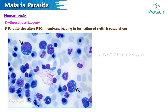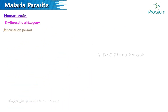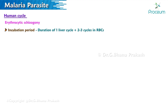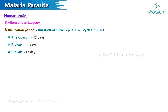Malarial pigment becomes visible inside red blood cells in the late trophozoite and schizont stage. The parasite also alters the red blood cell membrane, leading to formation of clefts and vacuolations. Incubation period is defined as one liver cycle plus 2–3 cycles in red blood cells: falciparum — 12 days; vivax — 14 days; ovale — 17 days; malariae — 28 days.